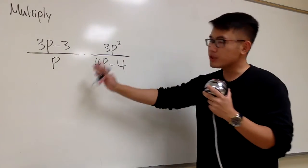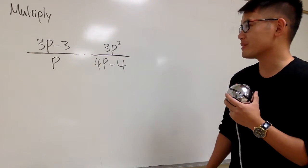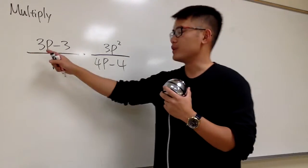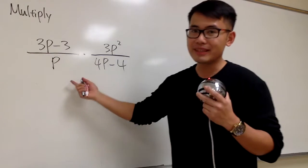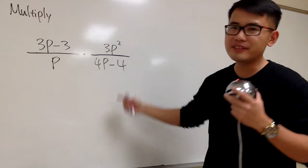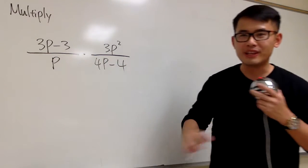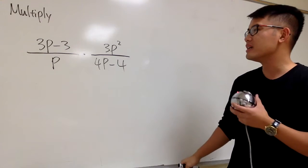Alright, for this question, we'll be multiplying and simplifying the result. The deal is that we'll factor, factor and then cancel, cancel whenever possible, right?